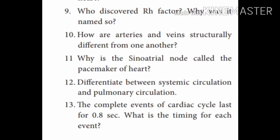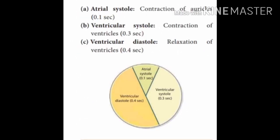Question thirteen: The complete event of the cardiac cycle lasts for 0.8 seconds. What is the timing for each event? Atrial systole — contraction of the atria — 0.1 second. Ventricular systole — contraction of the ventricle — 0.3 second. Ventricular diastole — relaxation of the ventricle — 0.4 second. With this, we have completed the short answers. Mark the answers, write in your classwork, and start learning for your exams.